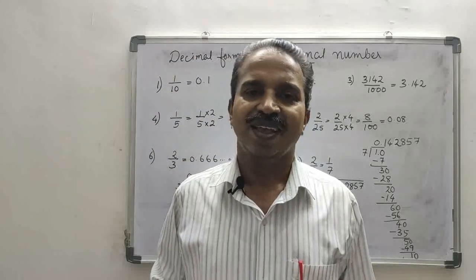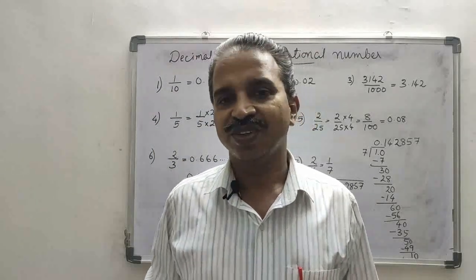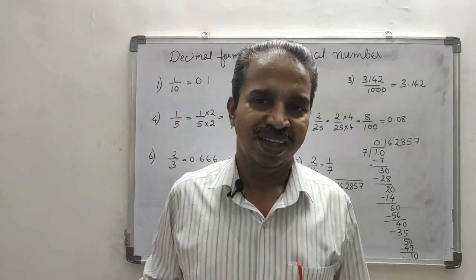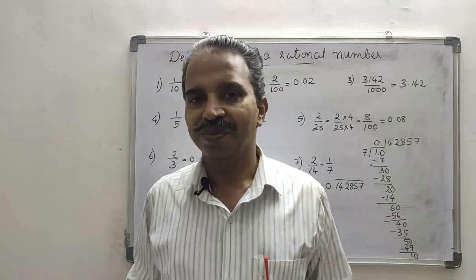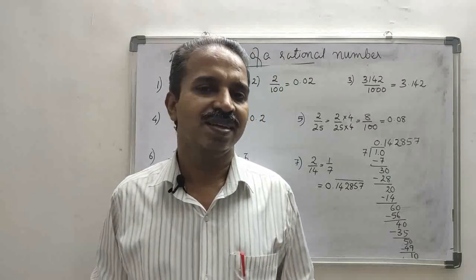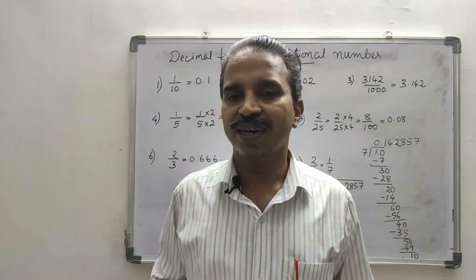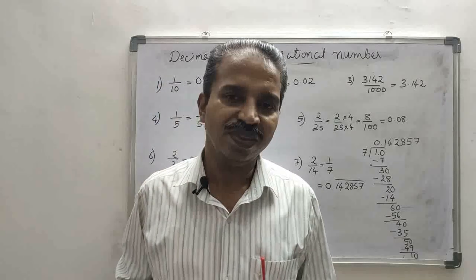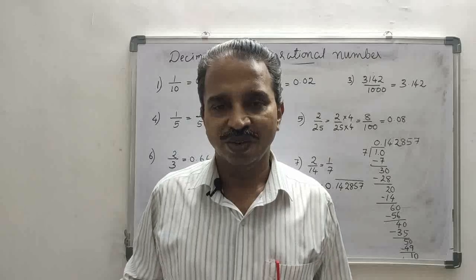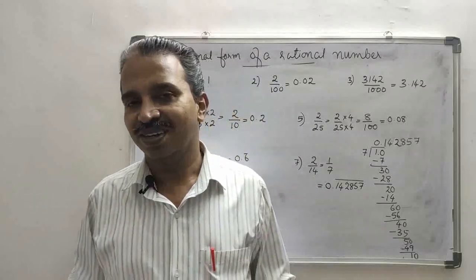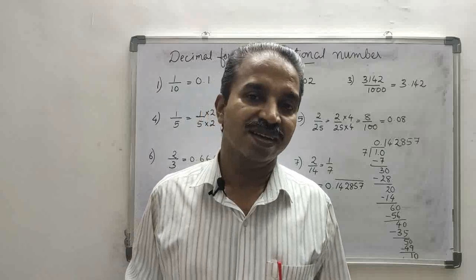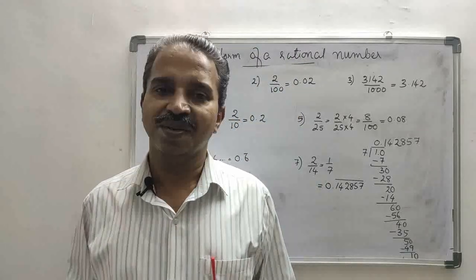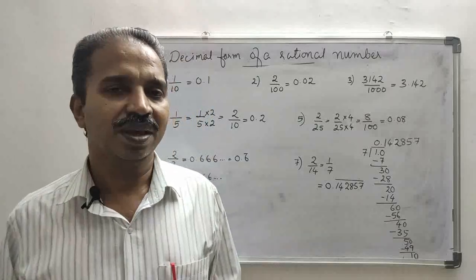Hello students, welcome back. In the first video, number system part 1, we saw different types of numbers and how to find rational numbers between any two rational numbers. Today, in this video, we are going to see what are irrational numbers and how to find irrational numbers between two rational numbers or between any two numbers.